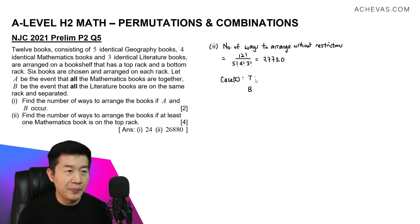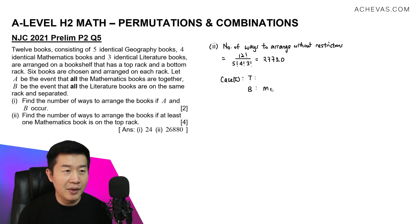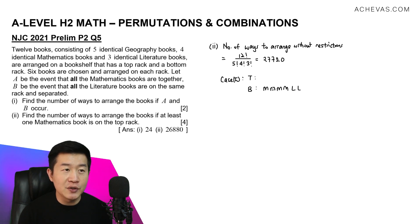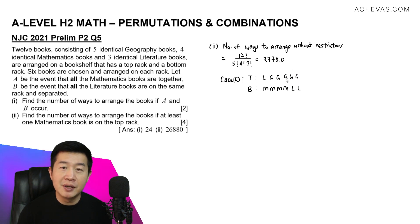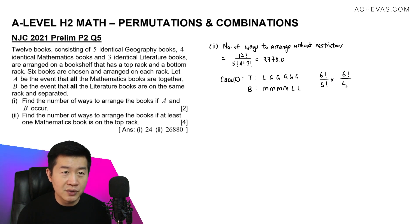Case 1: all four mathematics books are in the bottom rack. Two spaces remain in the bottom rack, occupied by literature books — with one literature book going to the top rack. The remaining spaces are filled by all five geography books. For the top rack: 6 factorial divided by 5 factorial (five identical geography books). For the bottom rack: 6 factorial divided by 4 factorial (four math books) divided by 2 factorial (two identical literature books). This gives us 90.